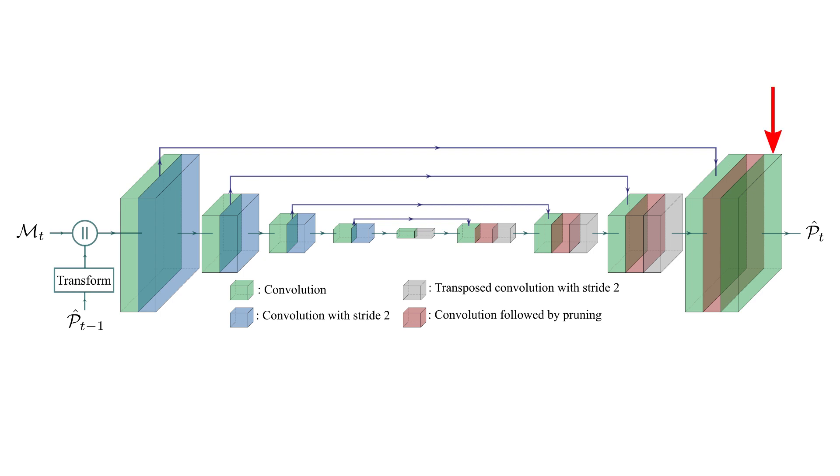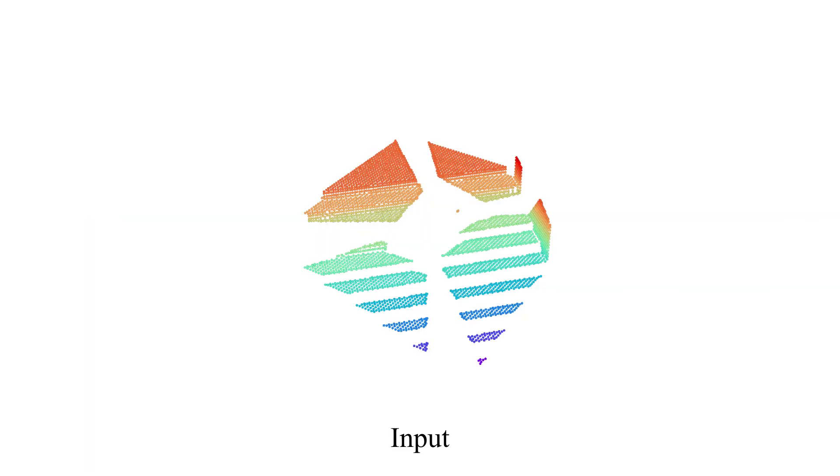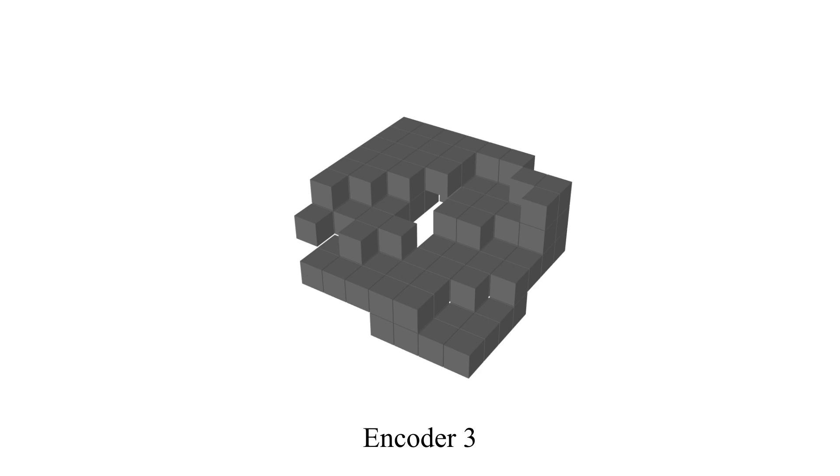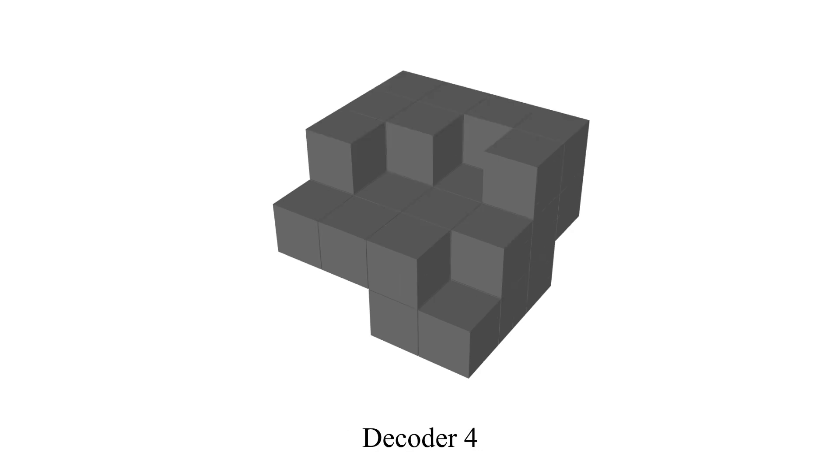The last layer of the decoder produces a sparse tensor with three-dimensional features. Similar to the input, each element in the feature vector corresponds to the coordinates of the point relative to the voxel's coordinate system. We can visualize the coordinates of the tensors along the different layers of the network to get a better understanding of how it reconstructs the scene.